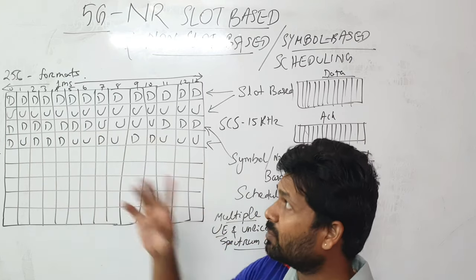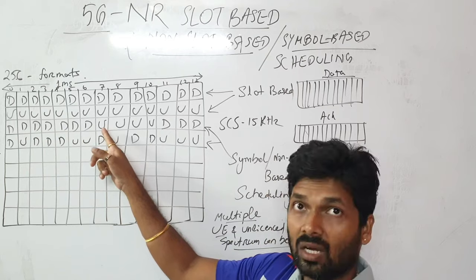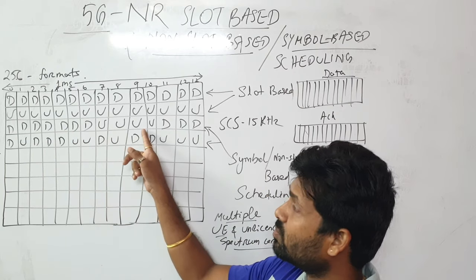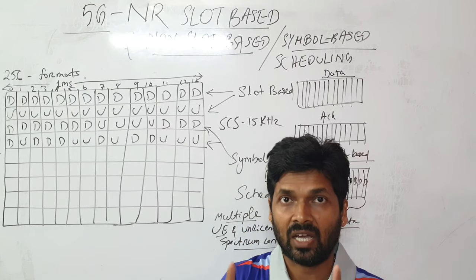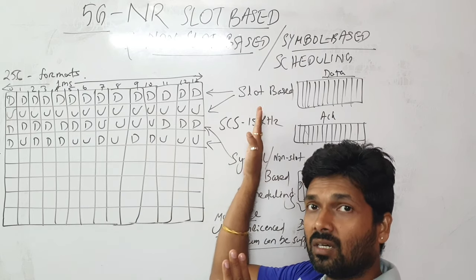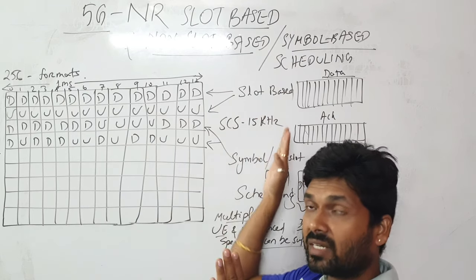If I send some downlink data, I can get the acknowledgement here in the same slot itself. Within one millisecond, I don't need to wait for the other radio subframe or the second slot. I can get the acknowledgement in the same slot.